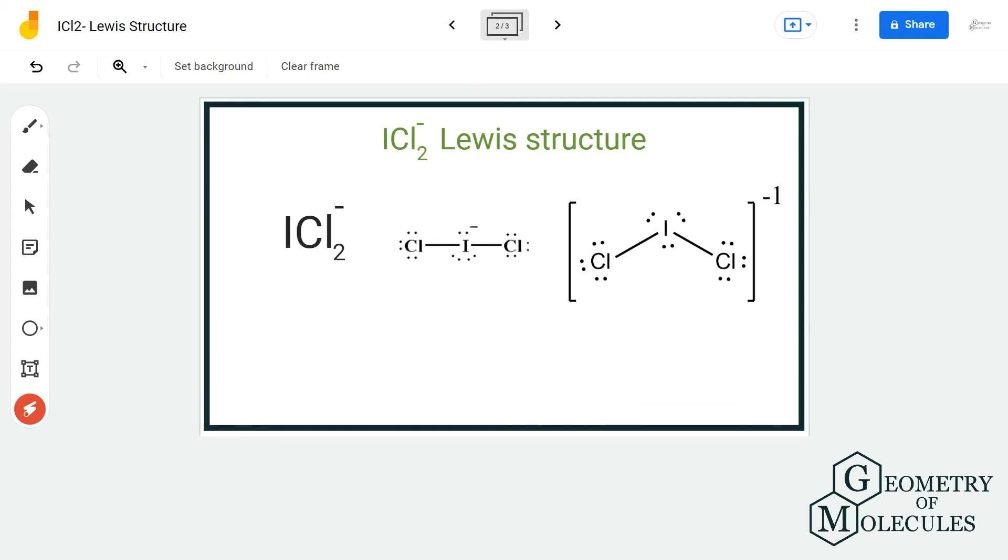You will get a formal charge of 0 for both these chlorine atoms, but you will get a -1 charge for this iodine atom. So this is the Lewis structure of ICl2- anion.